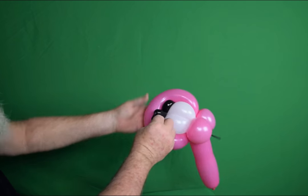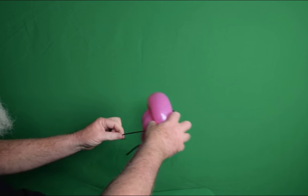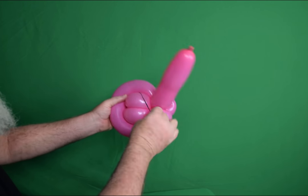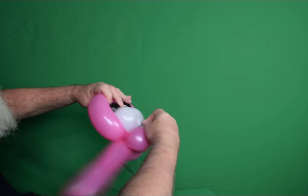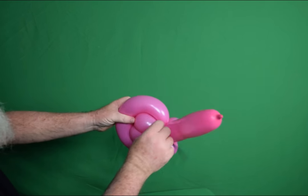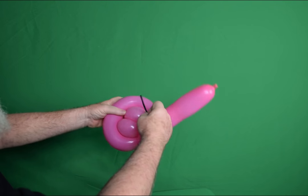So there's our eyebrow. Then we'll do the same with the other. Poke it through. Bring it back to the back. Go down. Twist around. And if that part's sticking out, just kind of poke it through a little bit.